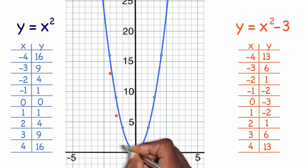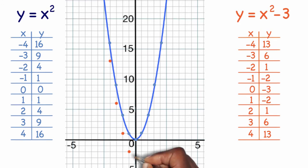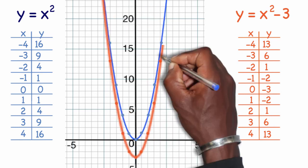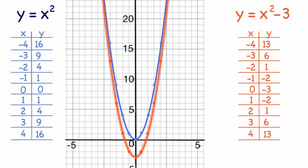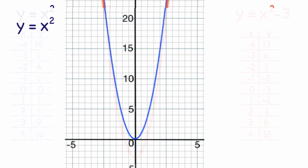Negative 4, 13; negative 3, 6; negative 2, 1; negative 1, negative 2; 0, negative 3; 1, negative 2; 2, 1; 3, 6; 4, 13. And in comparison to my parent graph, the original graph has in fact been shifted down three spots.